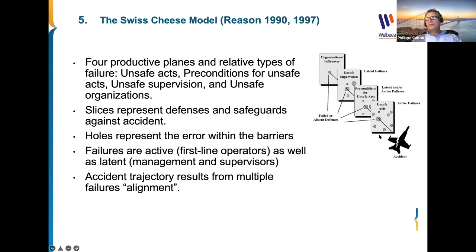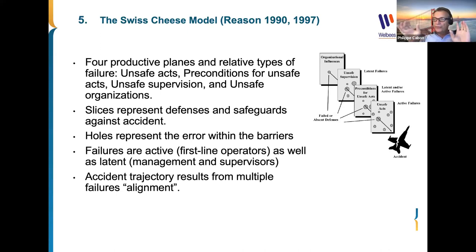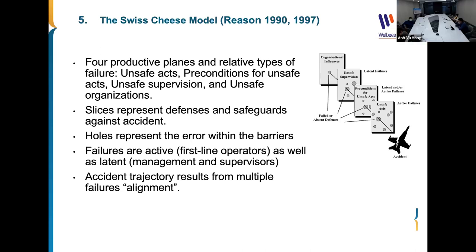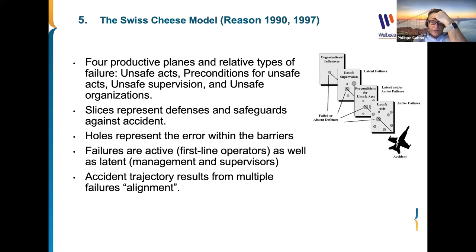The model distinguishes between two types of failure: active failures, which occur on the workstation — errors and violations — and latent failures, associated with the other defenses. A latent condition is something in the system that has not provoked an accident, is not really visible, but is a small default that may sometimes produce an accident. To illustrate the difference, let's take the Helios accident — an old aviation accident that occurred in Greece.